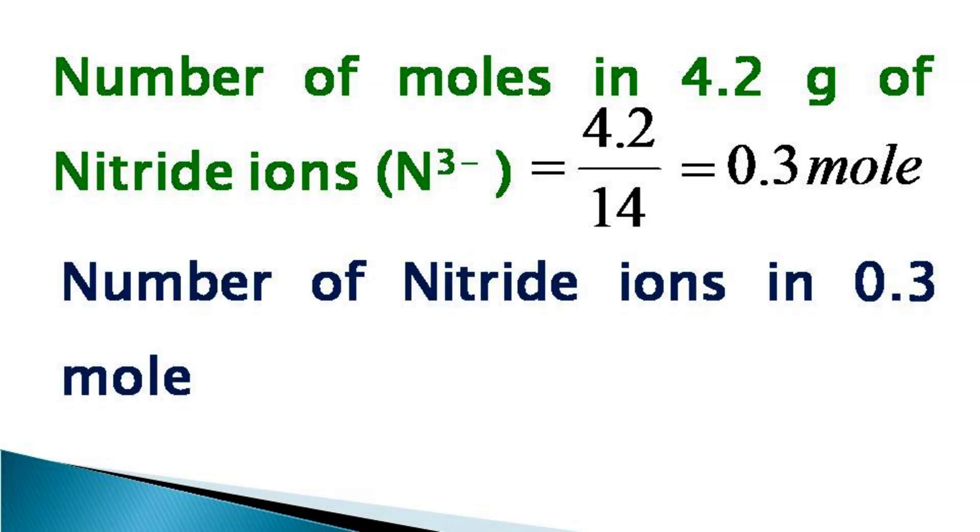Now we calculate the number of nitride ions in 0.3 mole, which becomes equal to 0.3 multiplied by Avogadro's number, that is given as Na. So it becomes equal to 0.3 Na.